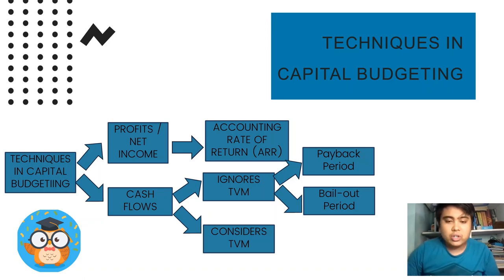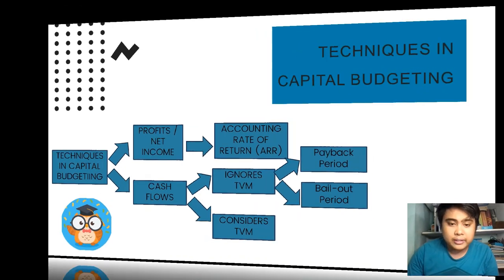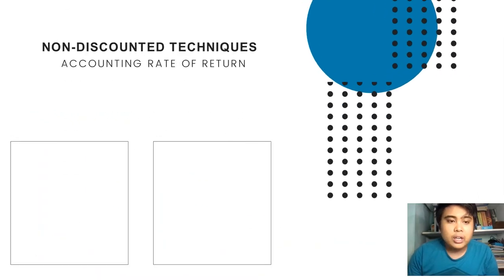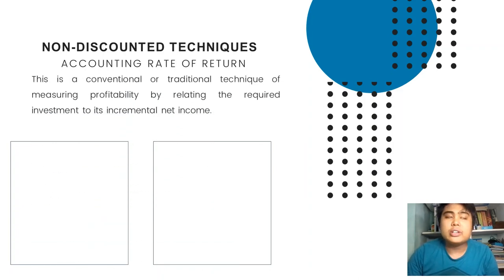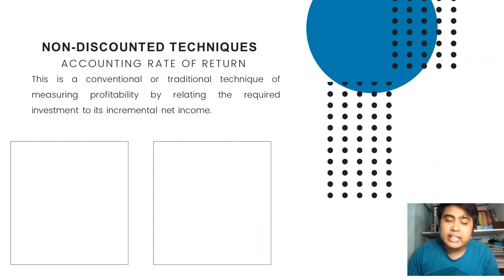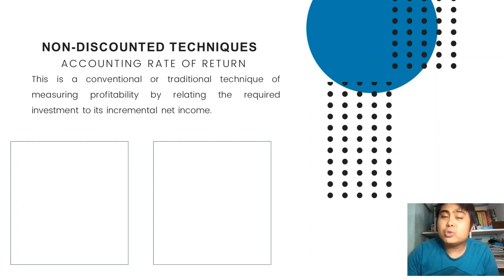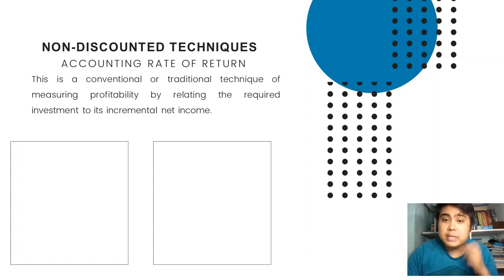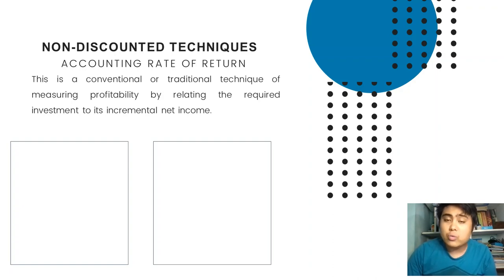Accounting rate of return is the traditional technique of measuring profitability by relating the investment amount to its incremental net income. Actually, ARR is not a concept introduced by capital budgeting. Capital budgeting uses cash flow numbers or cash basis of accounting, but ARR uses the traditional or accrual basis of accounting.